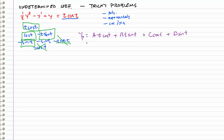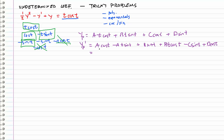We already have a lot more undetermined coefficients to determine. Let's differentiate twice and plug back in. yp' equals: A cosine t, minus A t sine t, plus B sine t, plus B t cosine t, minus C sine t, plus D cosine t. Combining like terms: (A + D) cosine t, plus (B − C) sine t, minus A t sine t, plus B t cosine t.